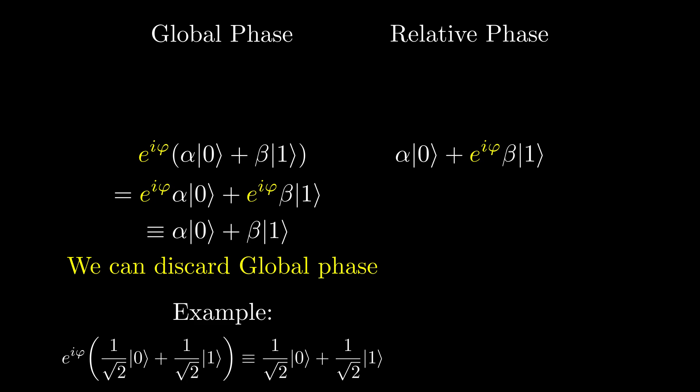Relative phase, on the other hand, is extremely important and matters in our calculations. Relative phase is when the amplitude of the |1⟩ state has a factor of a complex number. As we saw earlier, having relative phase rotates the qubit on the Bloch sphere around the z-axis.